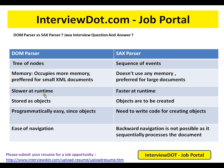DOM parser is slower at runtime, while SAX parser is faster at runtime. DOM stores data as objects directly. With SAX, objects are to be created — it uses callbacks, and for each event it calls you back so you have to create the objects yourself.